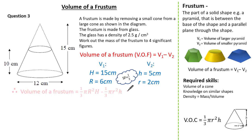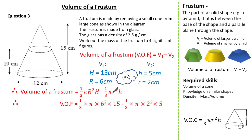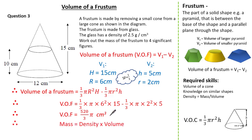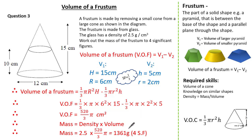Now we can apply our formula. The volume is the volume of the larger cone subtract the volume of the smaller cone. Substituting what we know: one-third times pi times 6 squared times 15, subtract one-third times pi times 2 squared times 5. The volume of our frustum is 520π/3 cm³. But the question wanted us to work out the mass, so we rearrange the density formula to get mass equals density times volume. With density 2.5 and volume 520π/3, the mass of our frustum to four significant figures is 1361 grams.